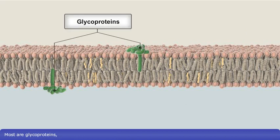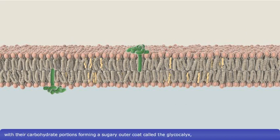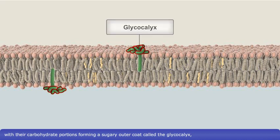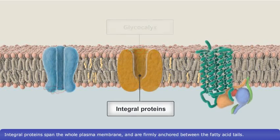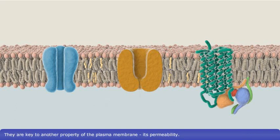Most are glycoproteins, with their carbohydrate portions forming a sugary outer coat called the glycocalyx, which functions in cell recognition and adhesion. Integral proteins span the whole plasma membrane and are firmly anchored between the fatty acid tails. They are key to another property of the plasma membrane: its permeability.